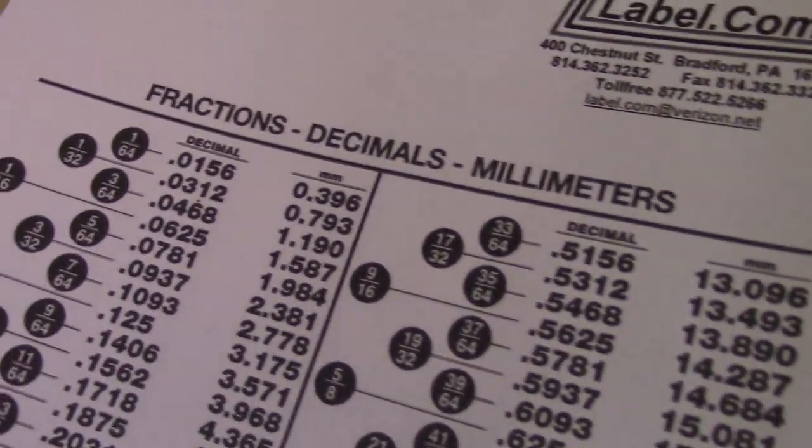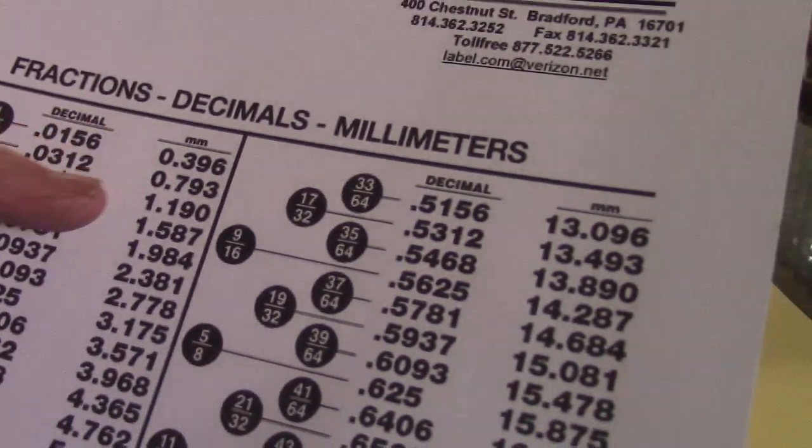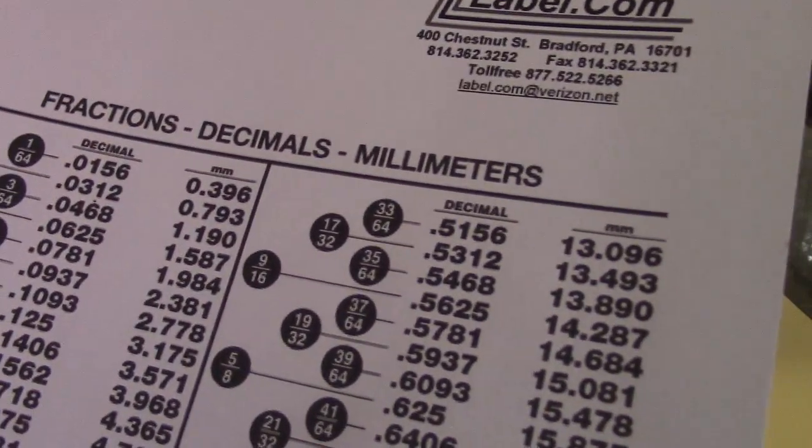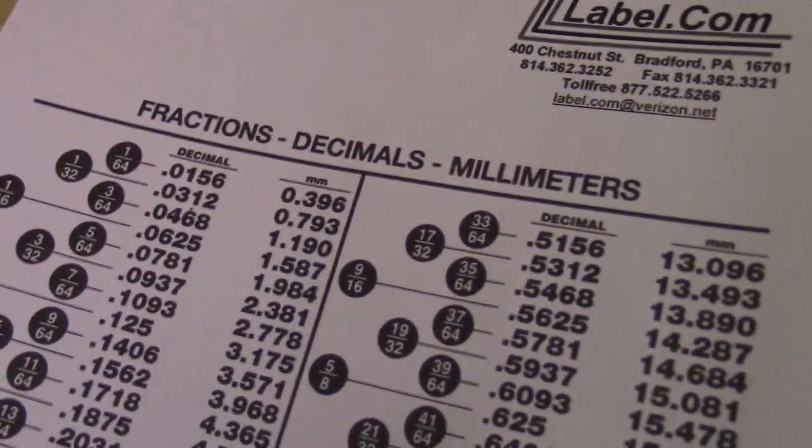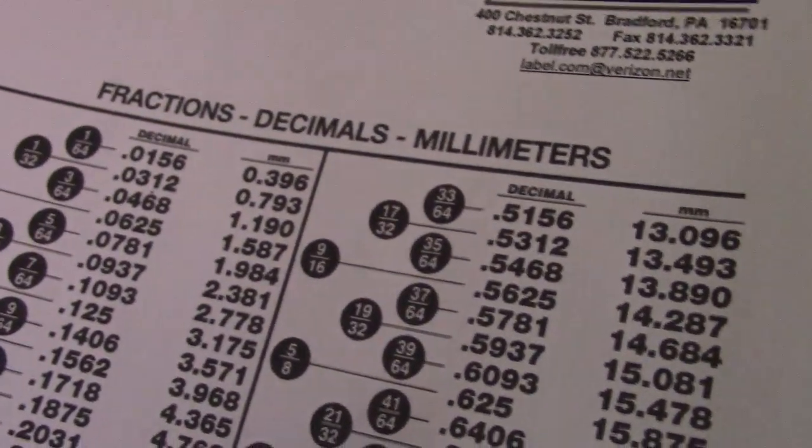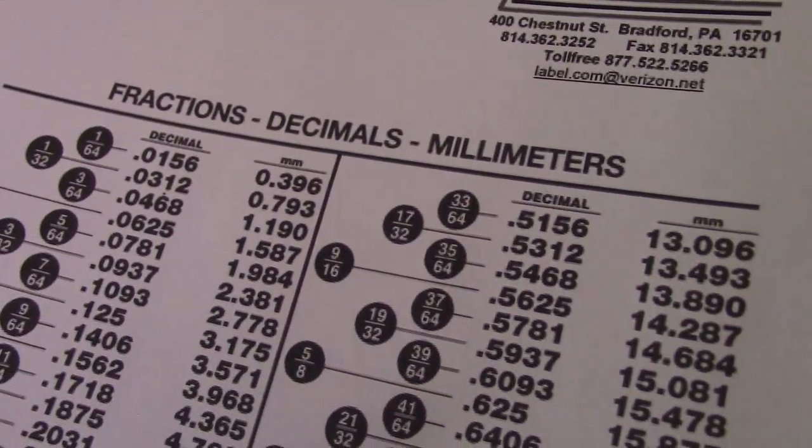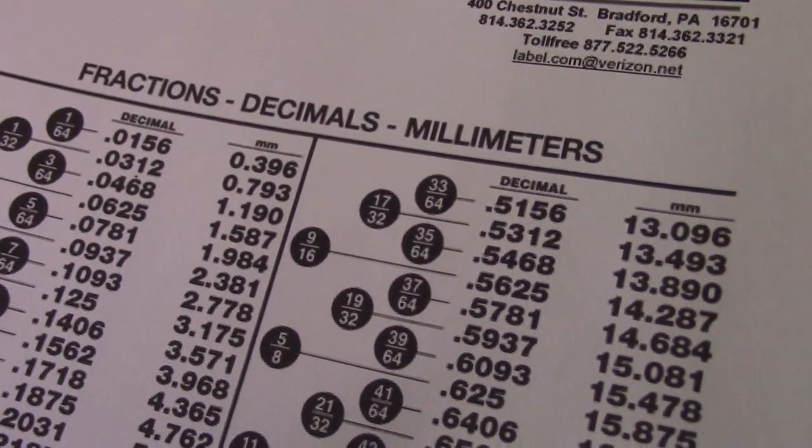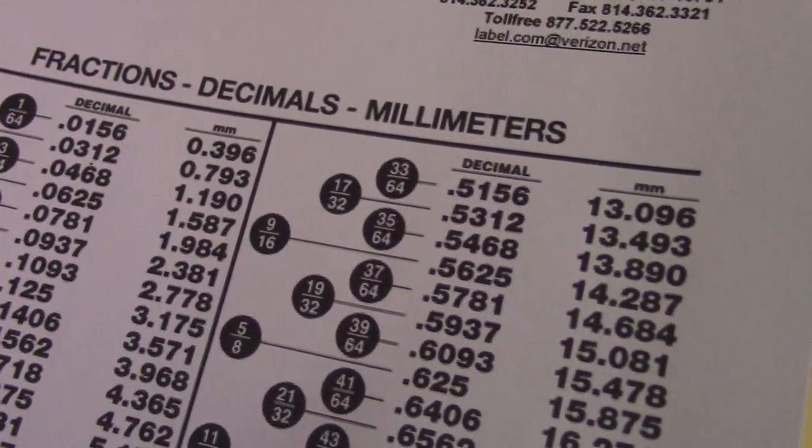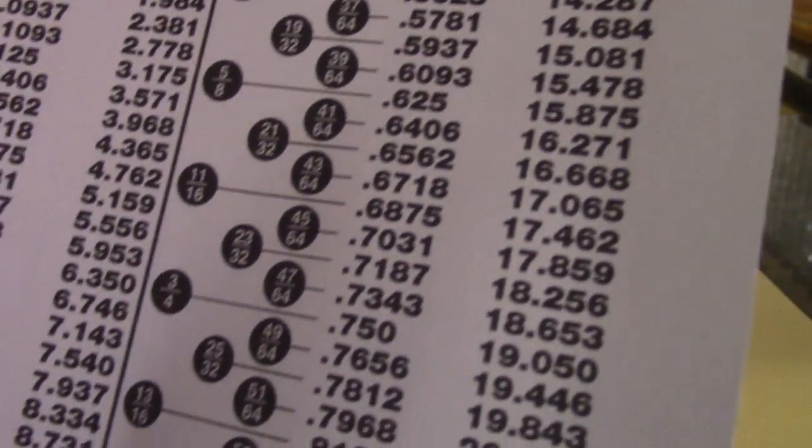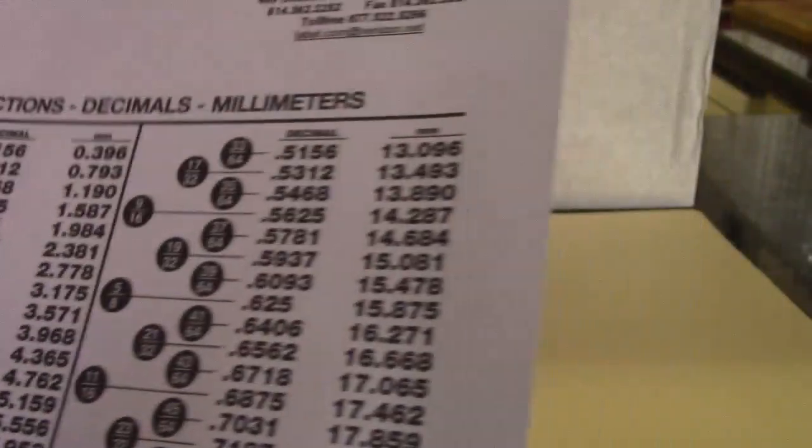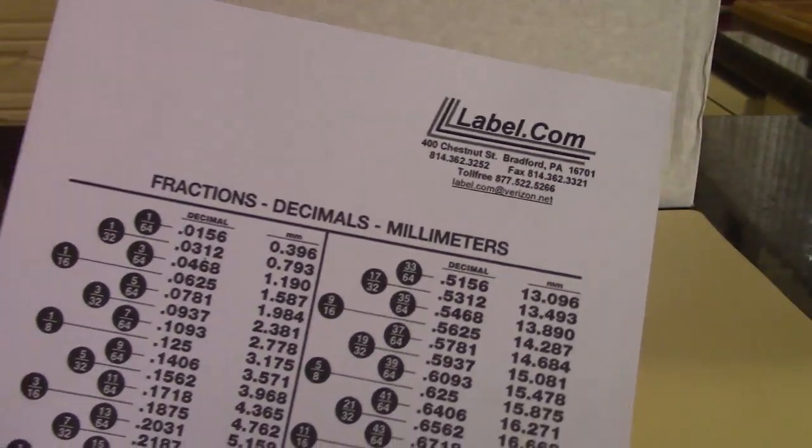You know, this one has fractions, decimals and millimeters, so if I want to use millimeters on the lathe, which is actually millimeters, if I don't want to use the DRO and just use the slides, the dials on the slides, I could just use millimeters. Just get these off the internet, Google and you'll get heaps of stuff like this.